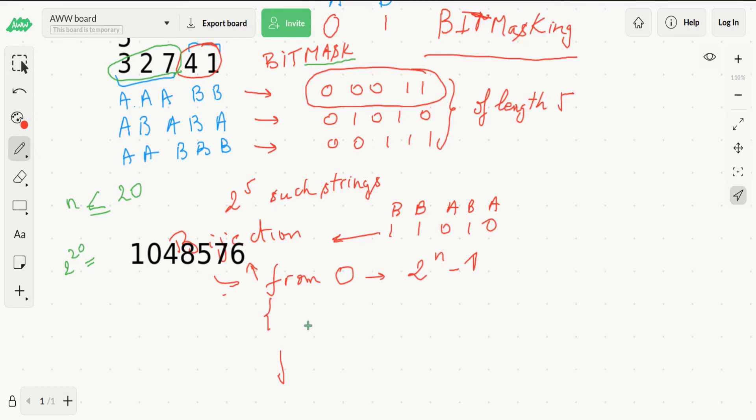Inside this loop, we'll have a for loop from 0 to n, because for each character or for each bit in this number, we need to check whether it is a 0, so we know to add this weight to group A, or whether it is a 1, so we know to add that weight to group B.